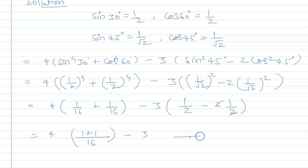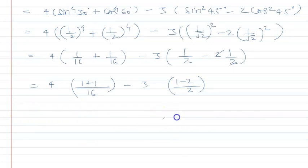Here also the LCM is 2, and we have 1 minus 2. Further simplifying, we get 4 times 2 upon 16, minus negative 1, which is minus 3, plus 3 times 1 upon 2.